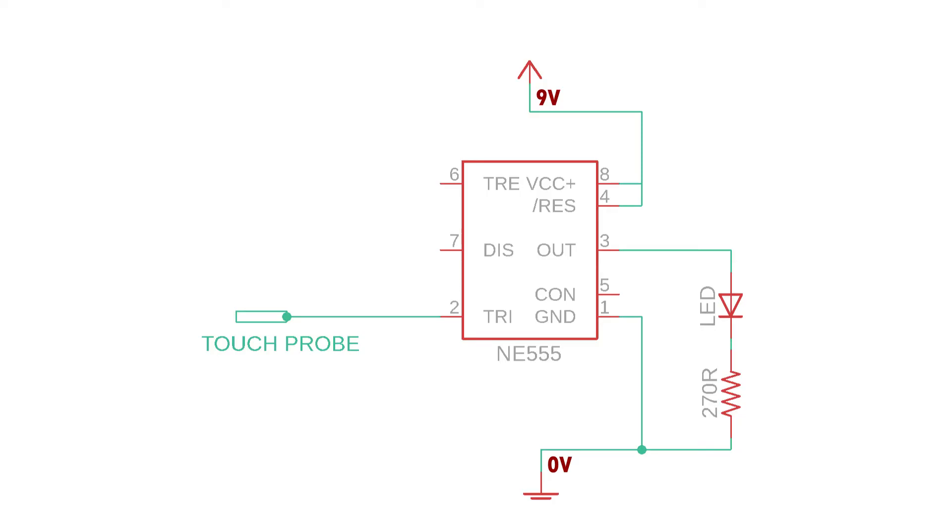And the output should normally be in off state whenever the circuit is not triggered, so pin 6 is connected to positive rail so that it always sees a voltage greater than 2 thirds of supply voltage and keeps the output off during idle time.